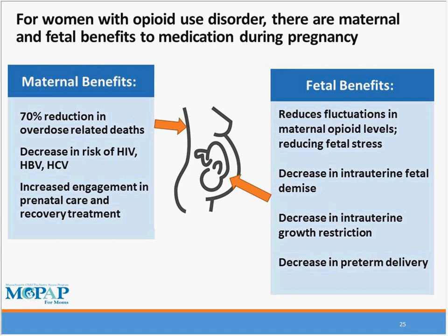There are significant demonstrated benefits for pharmacologic treatment of opioid use disorder in pregnancy. Maternal benefits include significant reduction in overdose-related deaths including during pregnancy and postpartum, decreased risk for injury transmission, and increased engagement in prenatal care and recovery treatment — which by extrapolation includes longer time to relapse, retention of custody, and retention in treatment. Fetal and obstetric benefits include reduction in fluctuations of maternal opioid levels thought to decrease fetal stress, decreased intrauterine fetal demise risk, decreased intrauterine growth restriction, and decreased rates of preterm delivery.